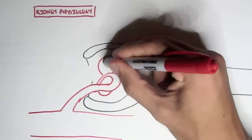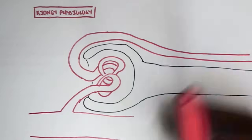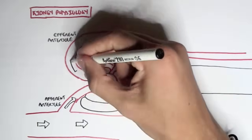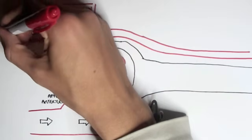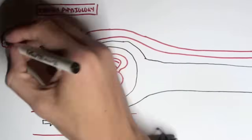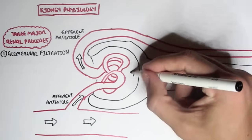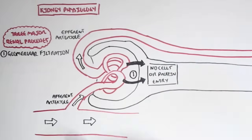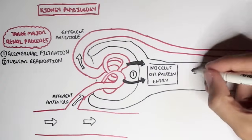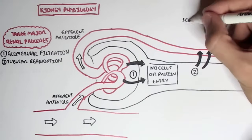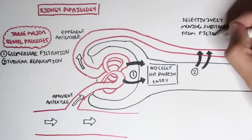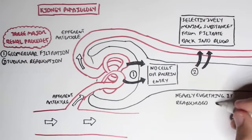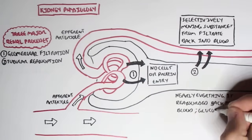Here we have a nephron from the Bowman's capsule to the end, with the blood vessel coming in — the afferent arteriole into Bowman's capsule and the efferent arteriole leaving out. Now let's look at the three major renal processes. The first is glomerular filtration, where substances from the glomerulus get filtered into the nephron — no cells or large proteins really enter, but most everything gets dumped from the glomerulus into the nephron. Following filtration, we have tubular reabsorption, where substances that were previously filtered get reabsorbed back into the blood — glucose, amino acids, and water that were just filtered — so only a small amount of substances is actually left in the nephron.